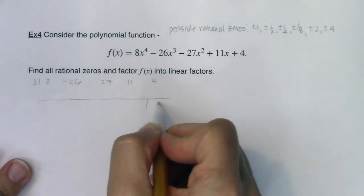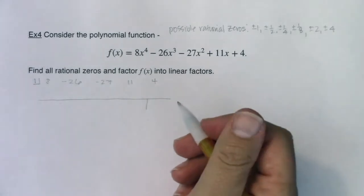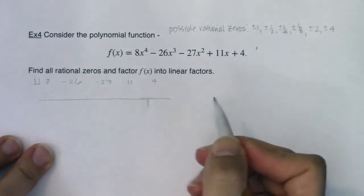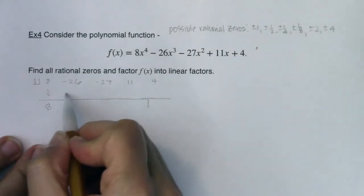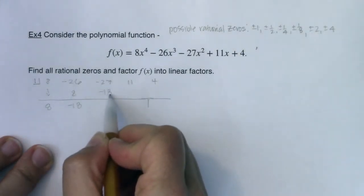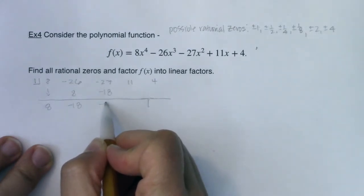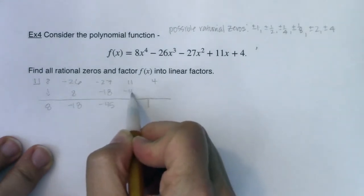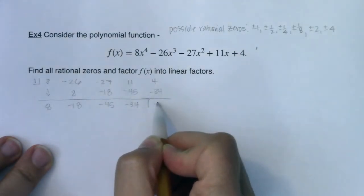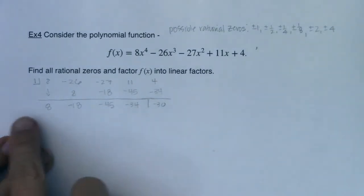What am I hoping for in this remainder? A zero. If that's the case, I'm going to be pretty pumped, but let's see. We've got eight, eight, negative 26 plus eight would be negative 18. This is not looking good. This is going to be negative 45, negative 34, negative 30. This one wasn't it. So positive one doesn't work. I'll take that off my list.